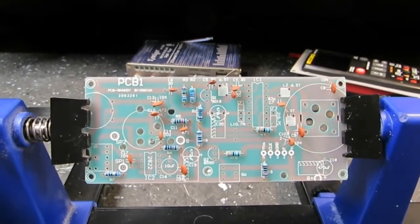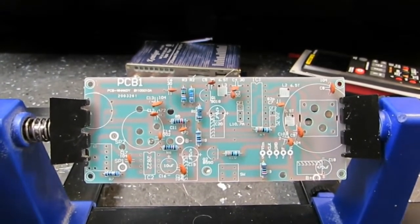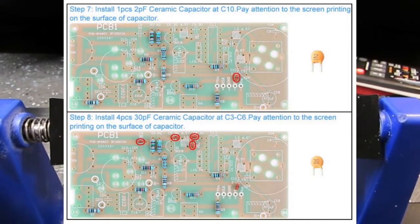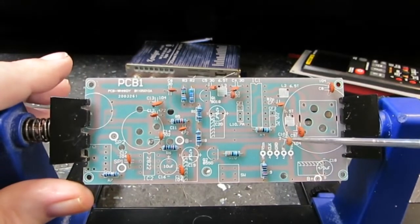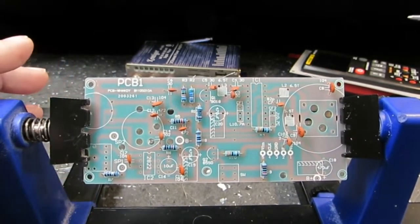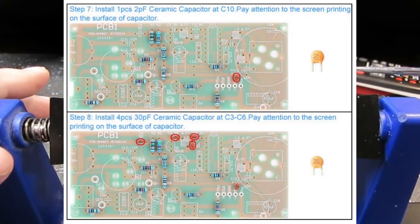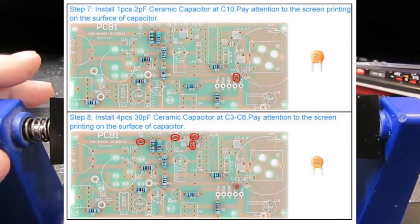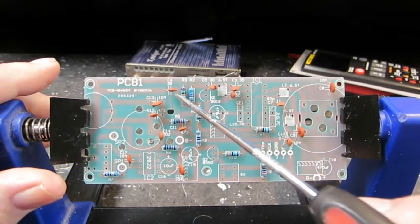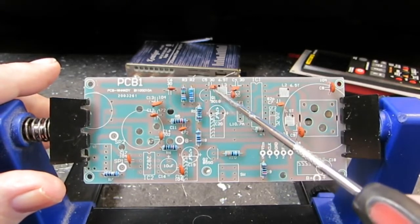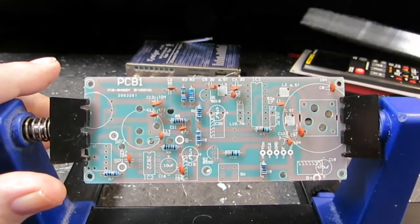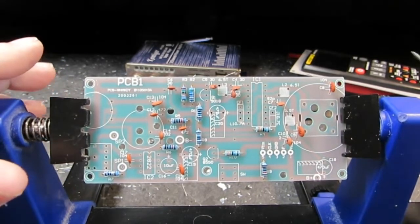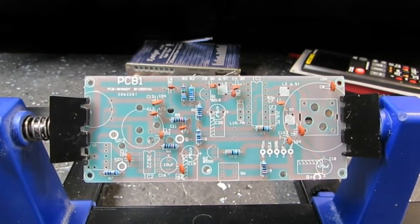Back again. I have the ceramic capacitors all installed. We'll go over them here one at a time. Starting with step seven. Install one piece is a two picofarad ceramic cap at C10. That is over here. C10 right there. It goes kind of a diagonal shape right there. That's it right there. And the next one says four pieces of 30 picofarad. It's C3 through C6. And those are all up here.